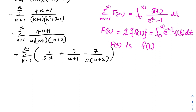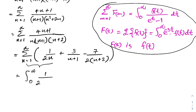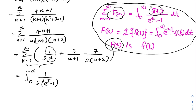We can convert this infinite sum into definite integrals. For the first term, the sum from n equals 1 to infinity of 1 over 2n becomes: integral from 0 to infinity of 1/2 times f(t) over (e^t minus 1) dt. Here f(m) equals 1/n, and the inverse Laplace transform of 1/n is 1, giving e^t minus 1 in the denominator — wait, f(t) equals 1, so we get 1 over (e^t minus 1).